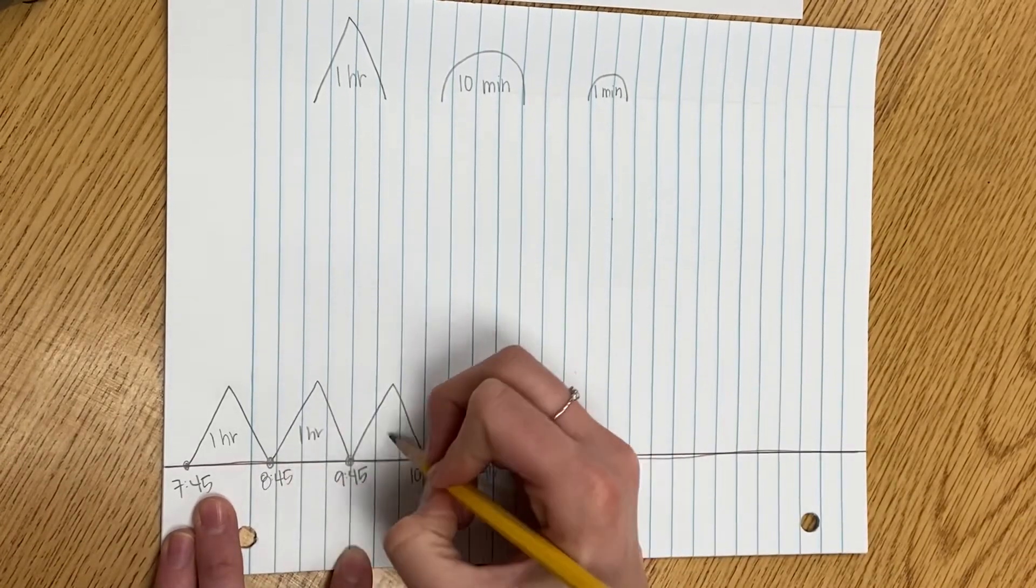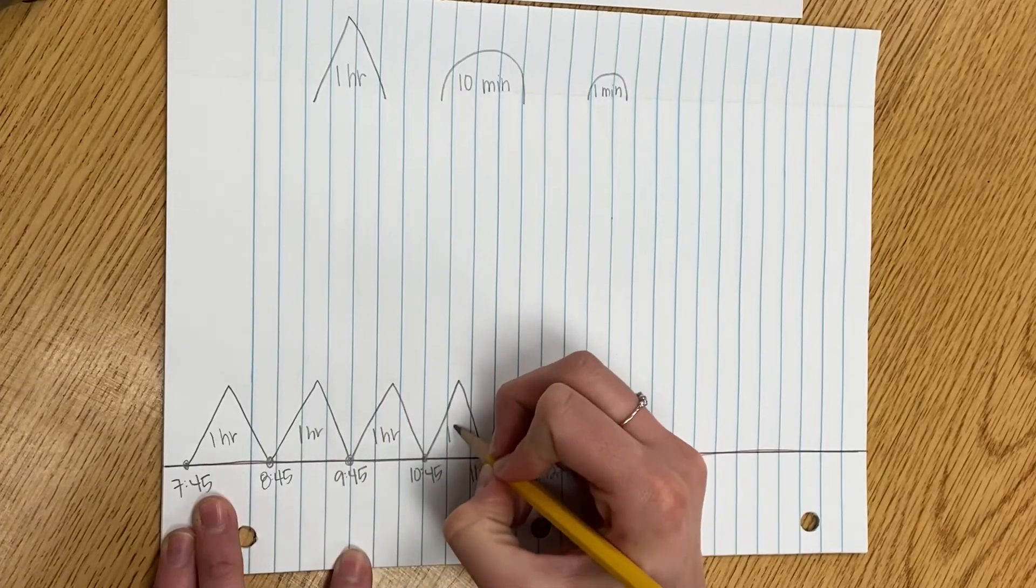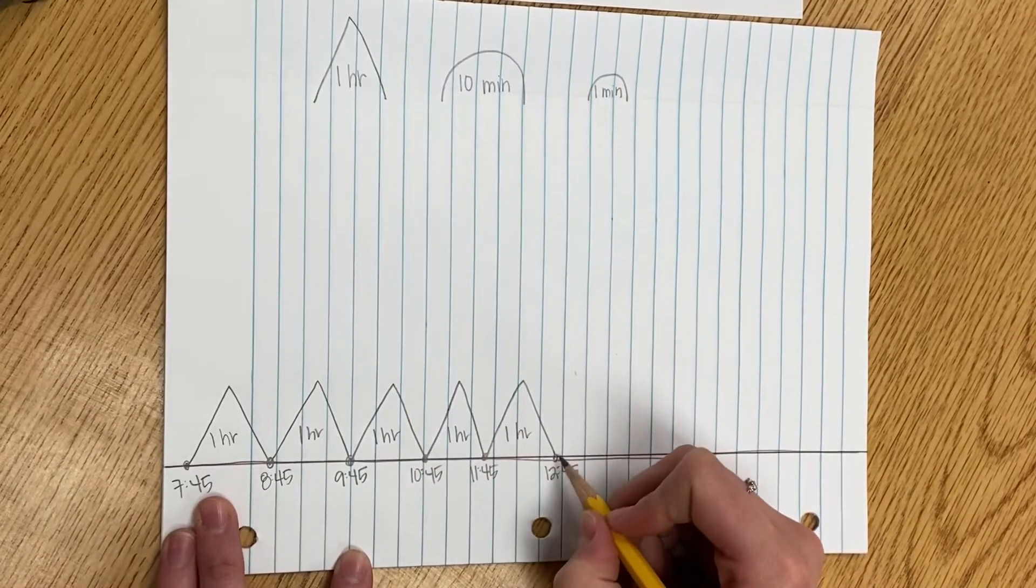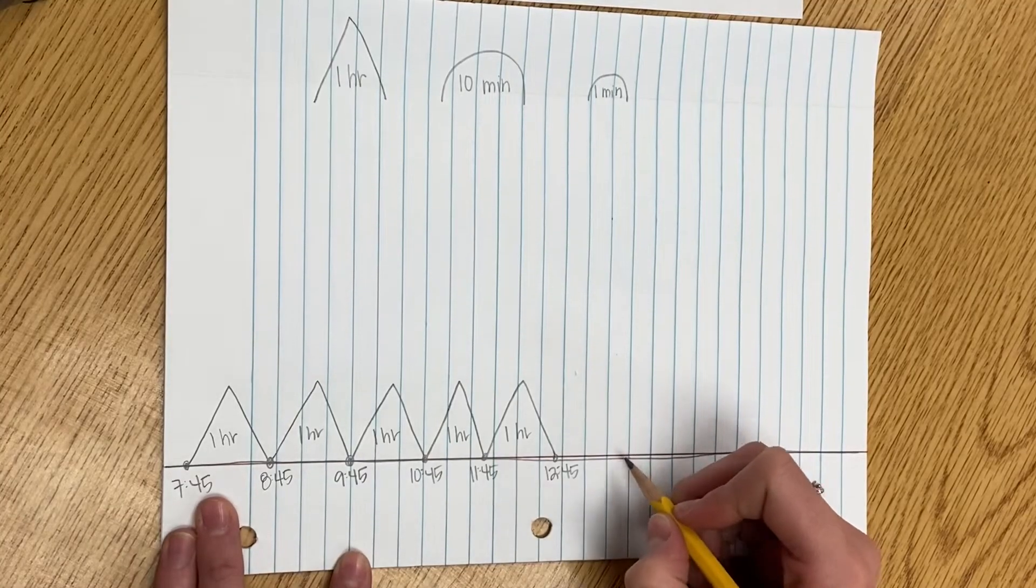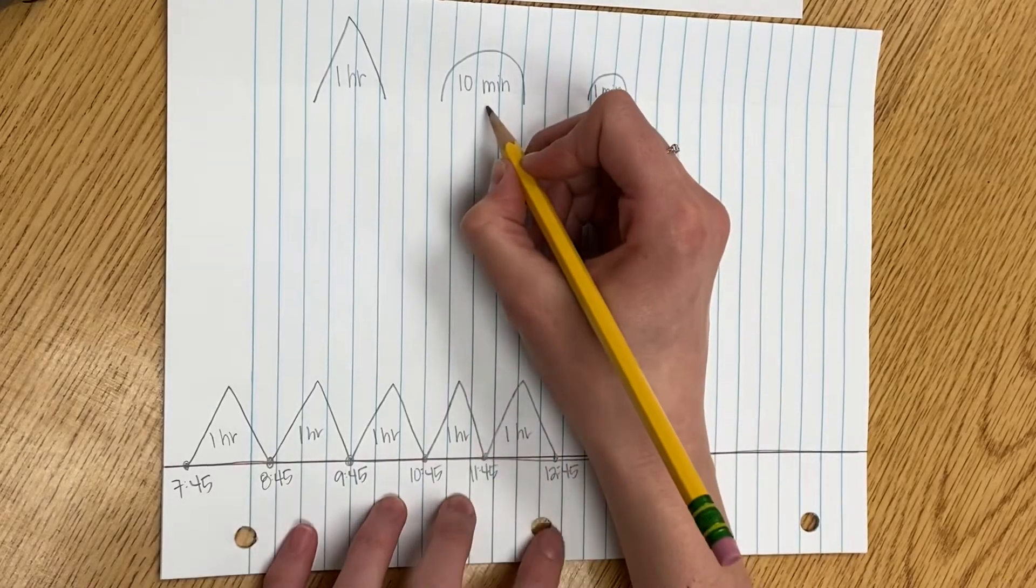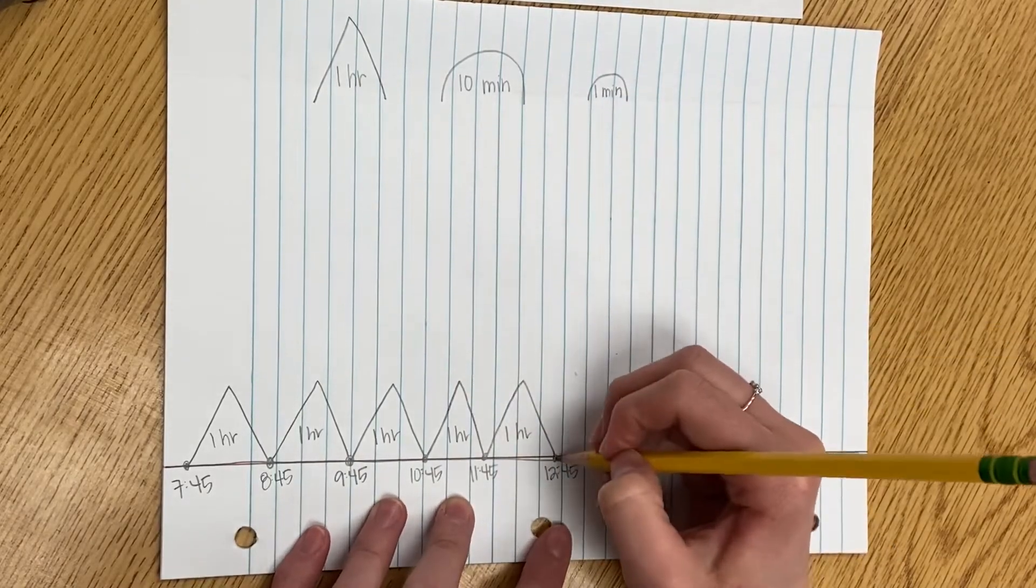Each of my mountains are worth one hour. Now, I can't add another hour because 1:45 would be past the end time of 1:28, so now I'm going to add hills to get me closer to that end.